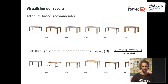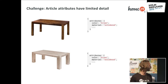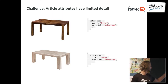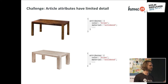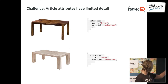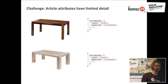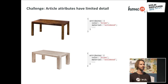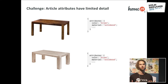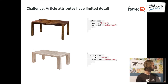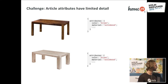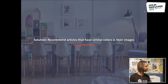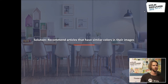We looked at what kind of attributes and data we actually have in the database and found an example like this: both of these tables are marked as color brown and material solid wood. But if you have a bunch of chairs in your home and you're trying to find a matching table, if the first one matches, the second one probably doesn't, and vice versa. This was the first thing that gave us the idea that maybe our content-based attributes just don't have enough detail, and we should see if we can somehow augment this information. And that's how we got the idea of using product images to generate recommendations.